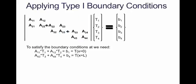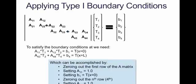To satisfy the boundary conditions, there are two equations that we need to satisfy. A11 times T1 plus A12 times T2 has to equal T at x=0, and A43 times T3 plus A44 times T4 has to equal T at x=L. In order to satisfy these and make these equations correct, we can do the following. If we zero out the first row of the A matrix, setting A11 equal to 1 and B1 equal to T at x=0, then we will have T1 equal to T at x=0.